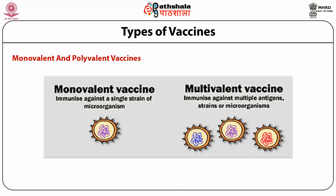Monovalent vaccines contain a single strain of a single antigen — for example, the measles vaccine. Multivalent vaccines contain multiple antigens, strains, or microorganisms — for example, the oral polio vaccine, which contains three live polio strains.